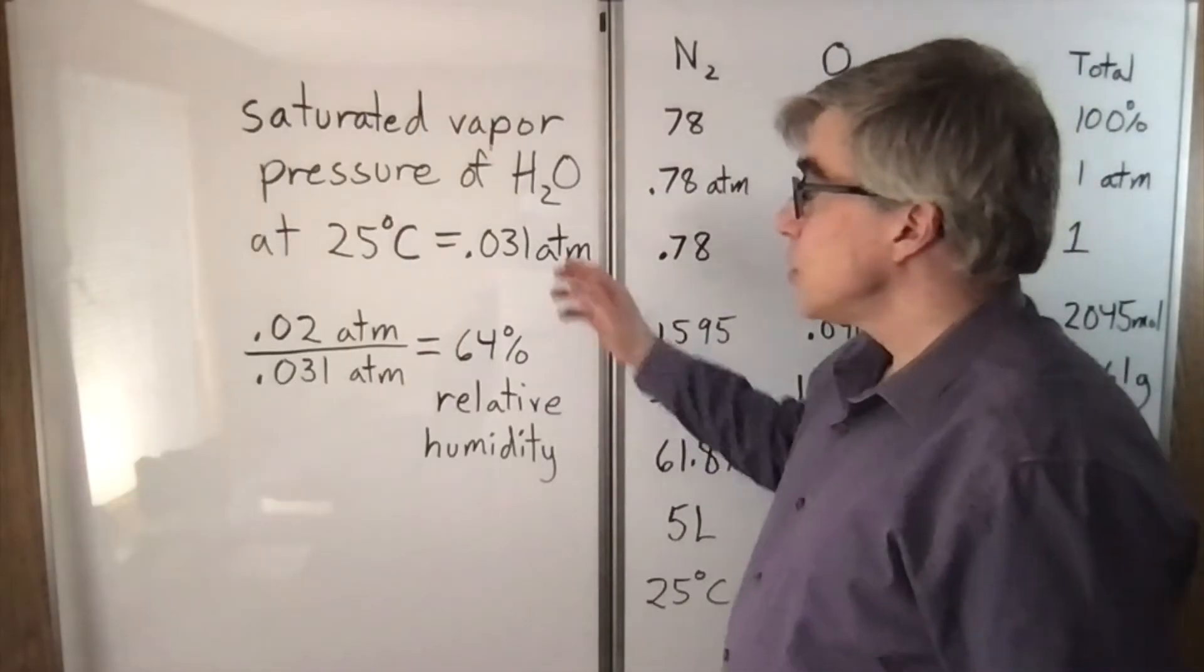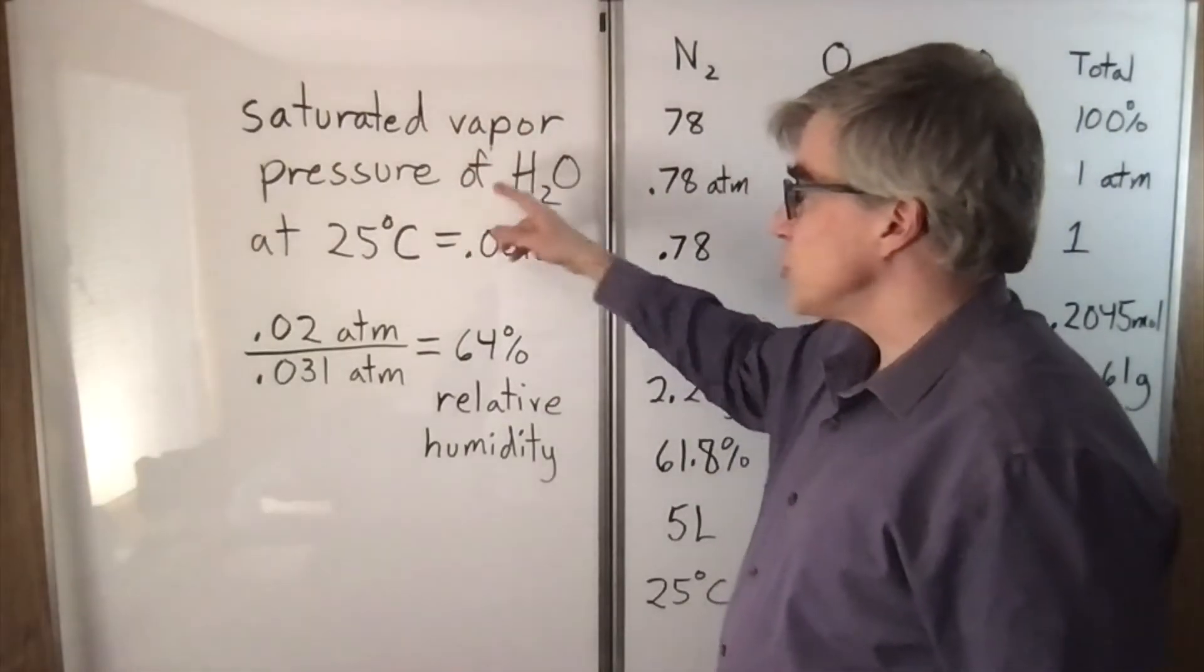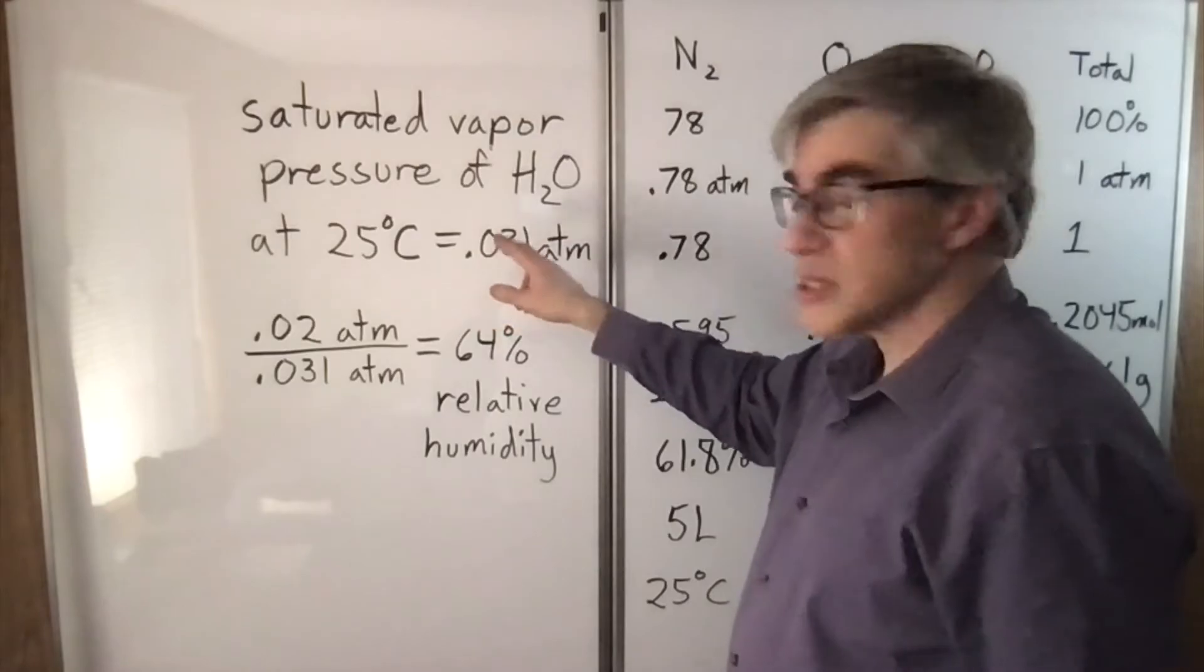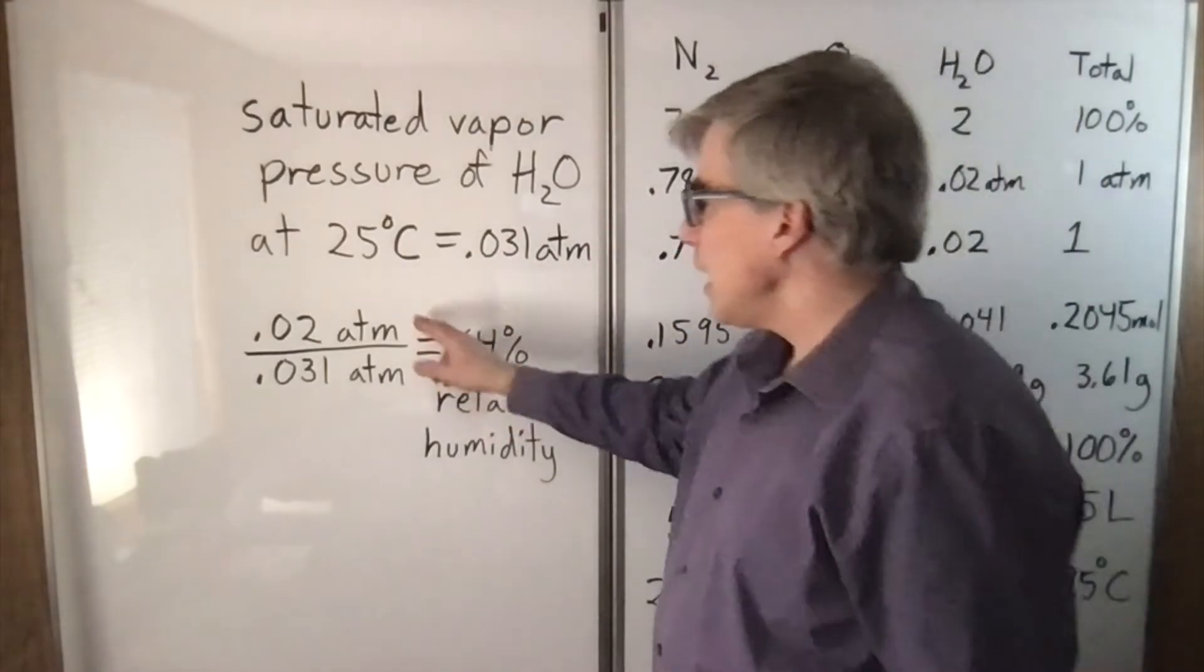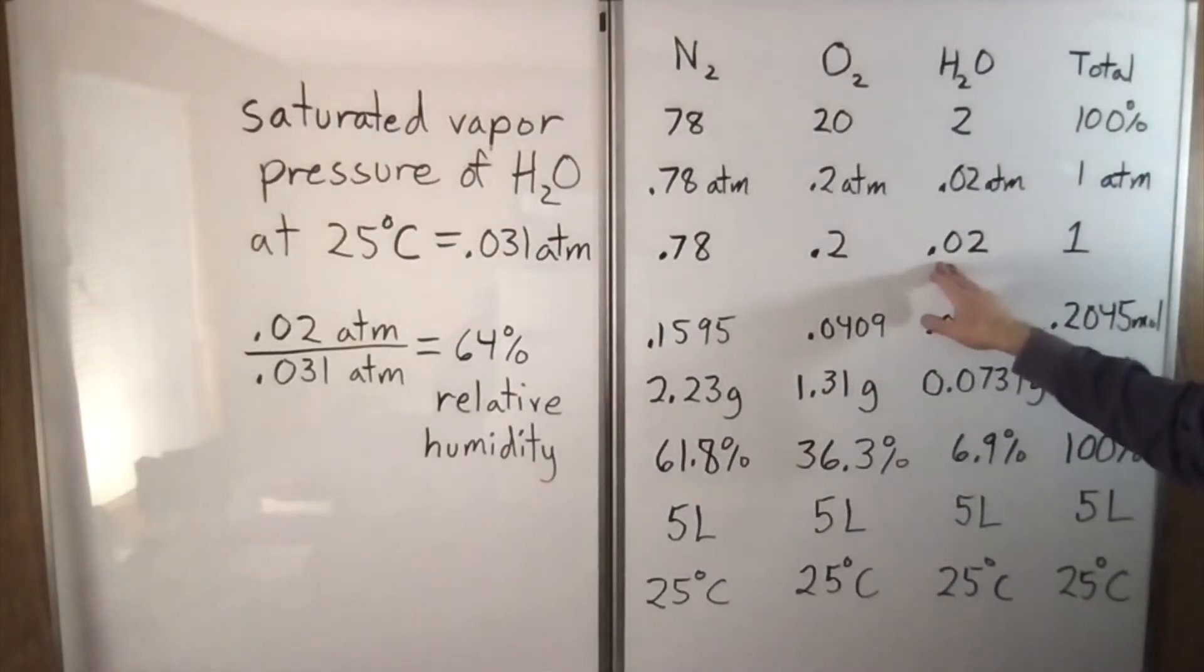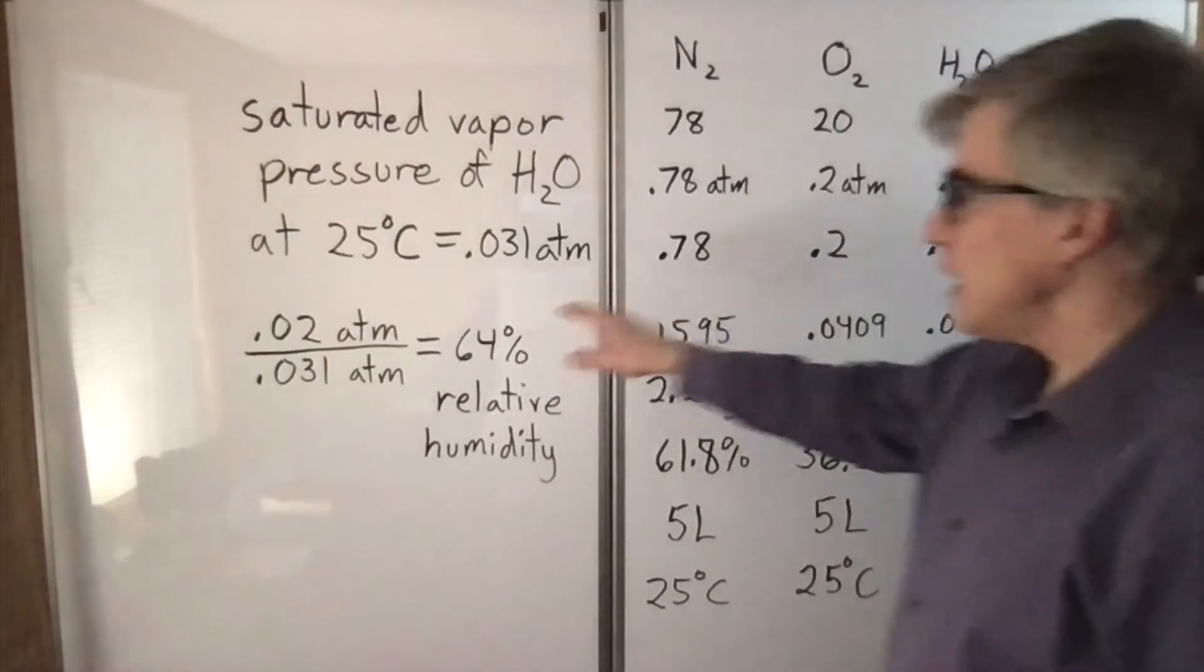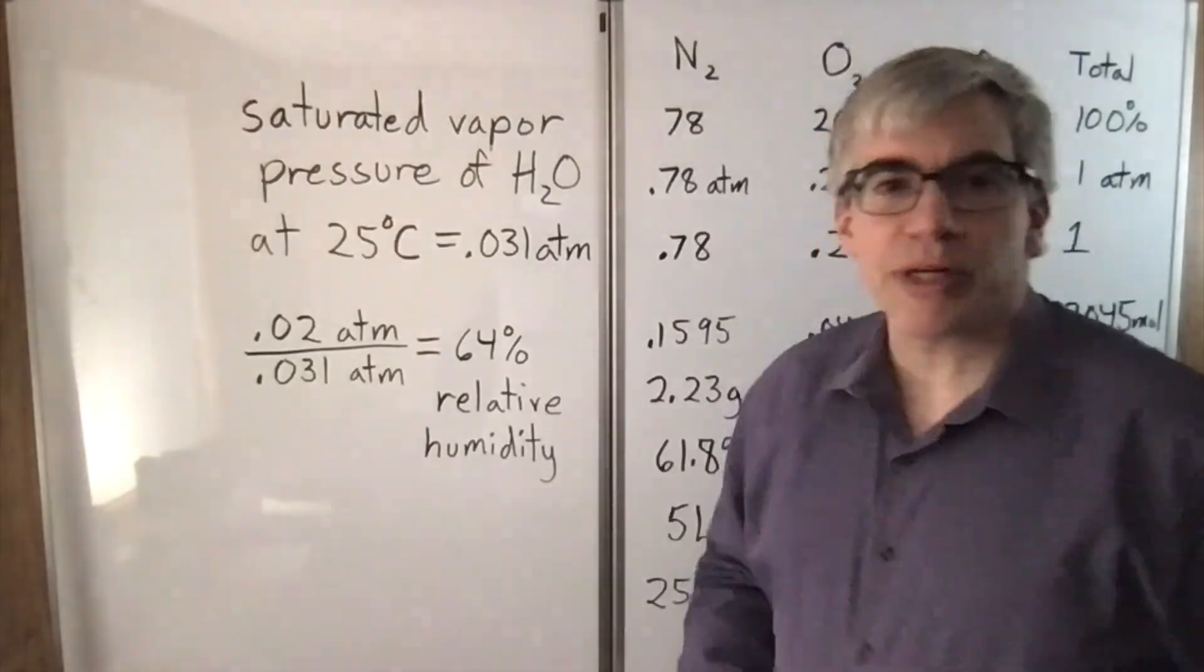As a bonus, we know the saturated vapor pressure of H2O at 25 degrees Celsius is 0.031 atmospheres, usually given in torr. And if we take the actual amount of H2O in our sample and divide by that, we get 64% relative humidity.